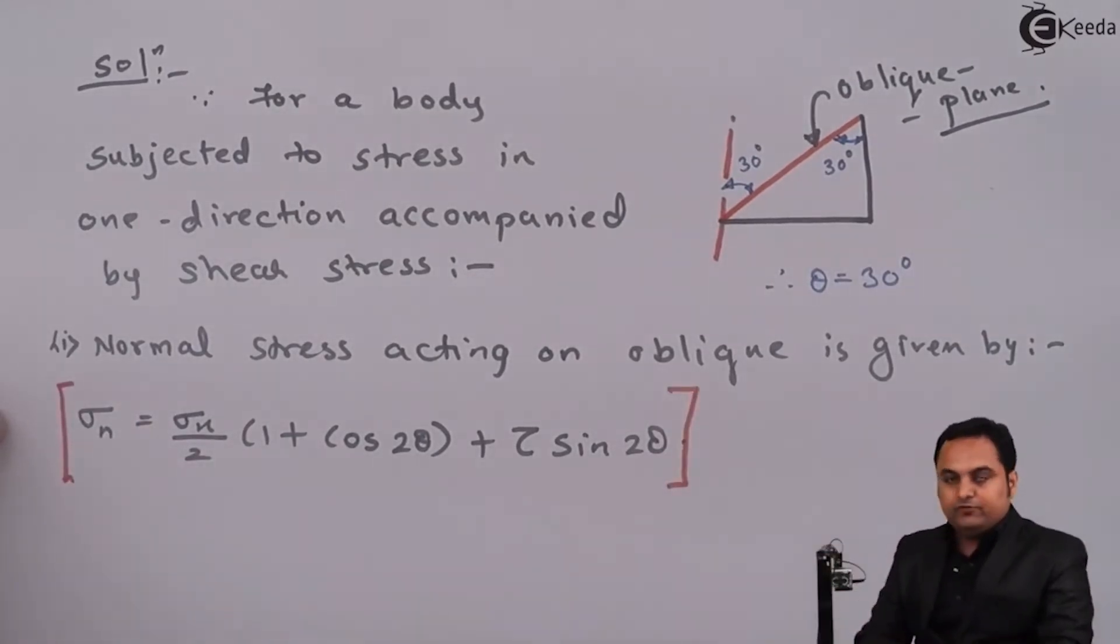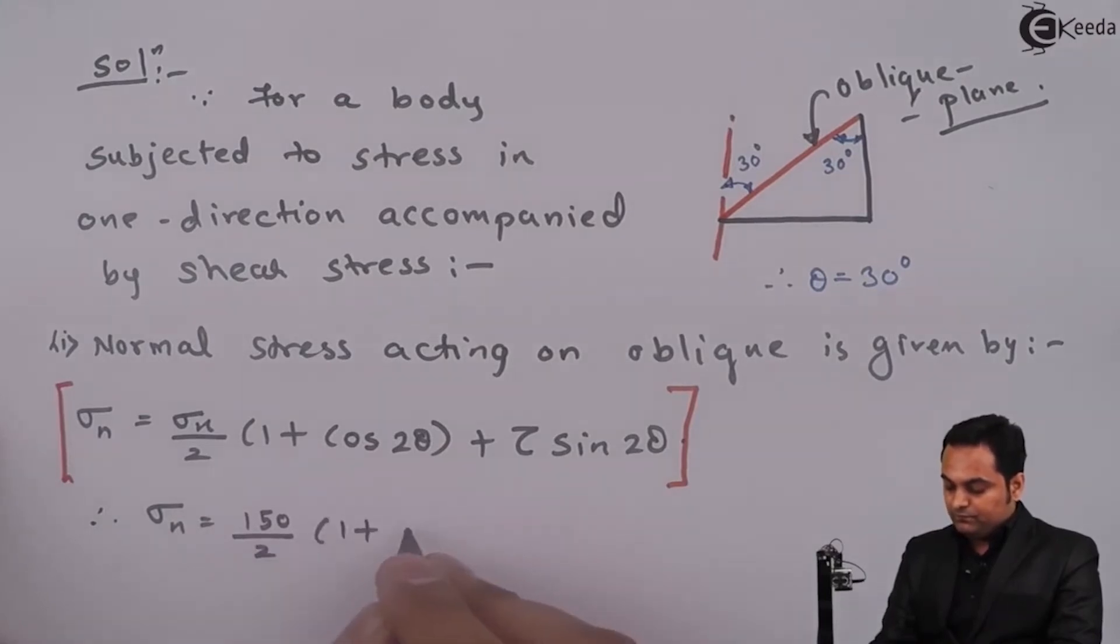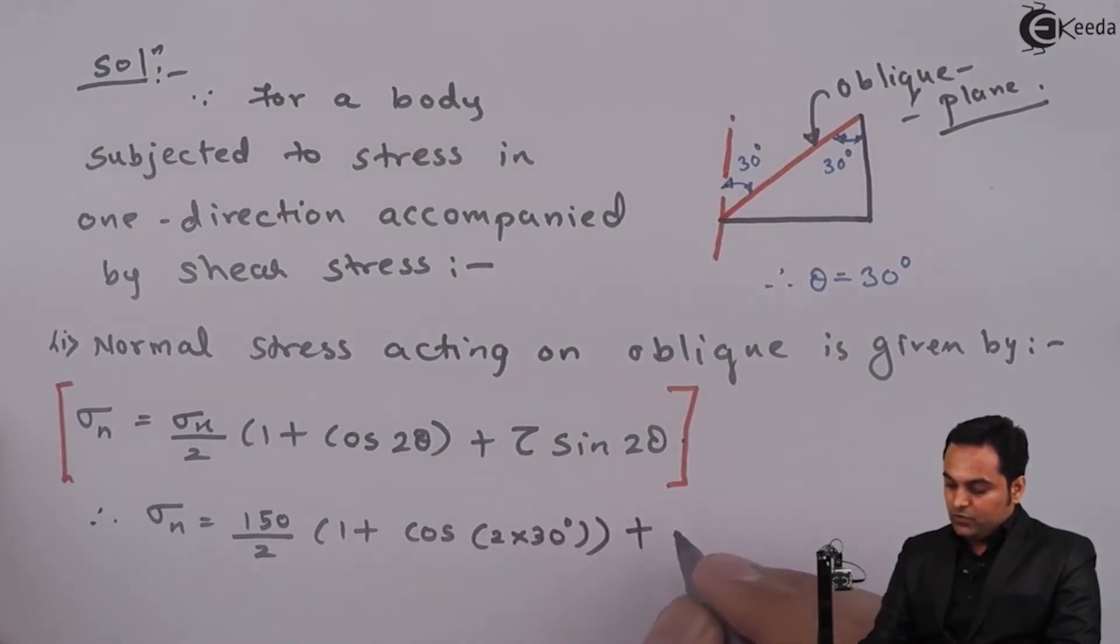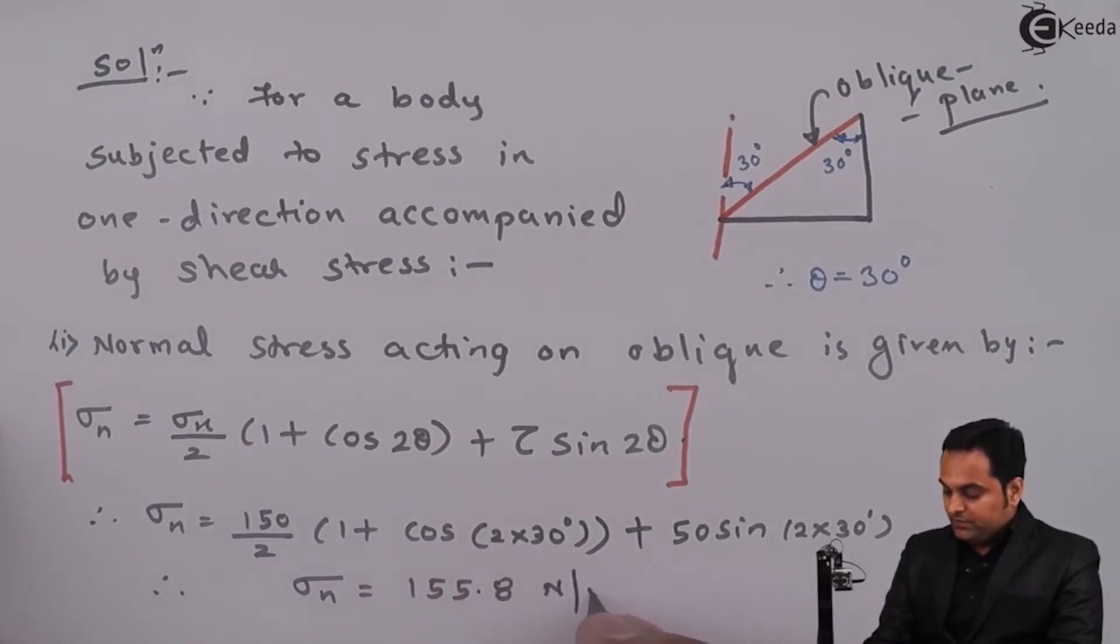So therefore, putting the values here: sigma x is 150, cos 2 into 30, cos 2 into 30, plus tau 50. So therefore sigma n comes out to be 155.8 Newton per mm square. The first answer.